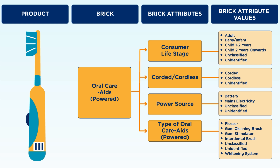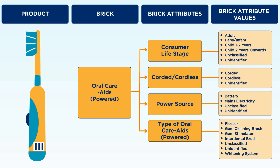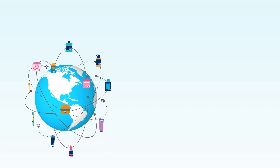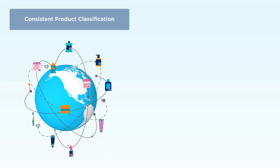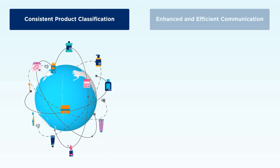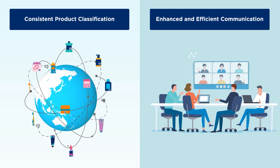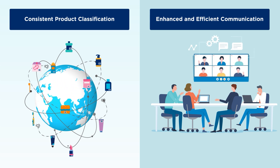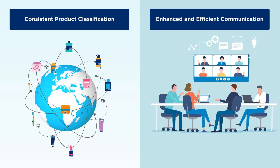For example, the attribute might be power source, and the values could be battery or mains electricity. The attribute sets up the query, while the attribute value provides the possible answers. This systematic approach ensures that products are classified consistently worldwide, enhancing communication and efficiency between suppliers and customers in the global marketplace.